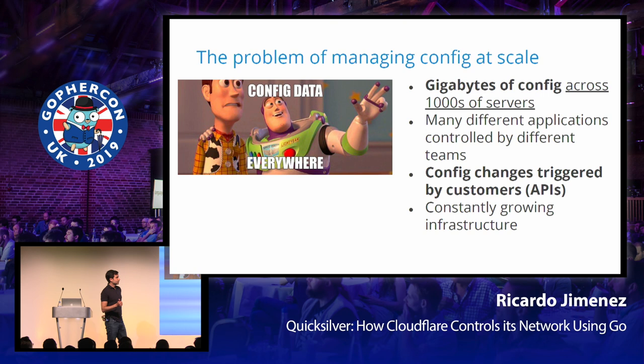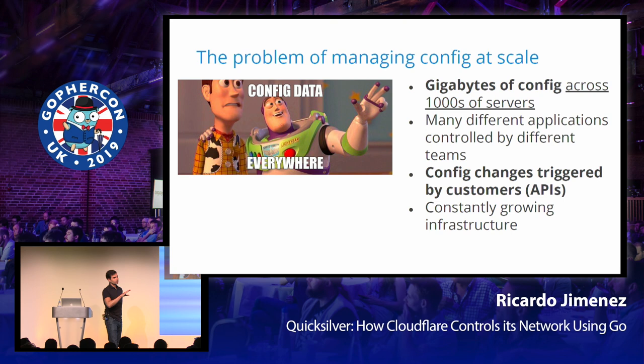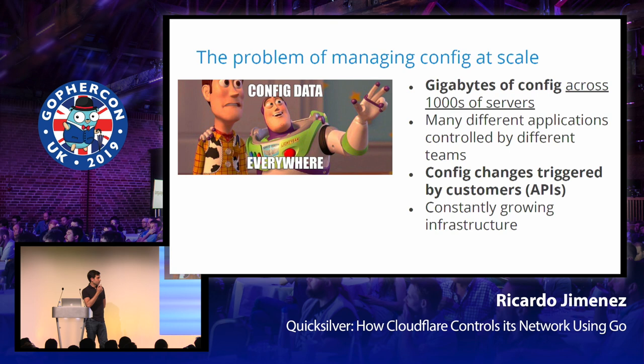Sometimes config changes are triggered internally by teams working on each of those software components — they want to deploy config changes to tweak behavior or optimize features. But many times it's just customers going to the dashboard to configure how Cloudflare works for them. Big customers often hit the API to do massive changes programmatically. This means we have a constant stream of real-time updates to the config that we need to coordinate across thousands of servers, on a constantly growing platform.